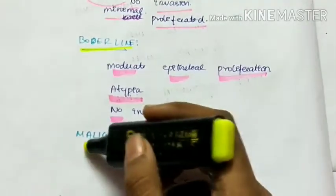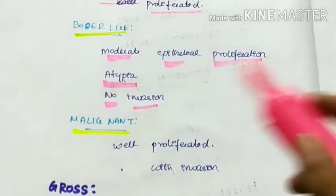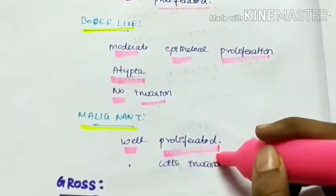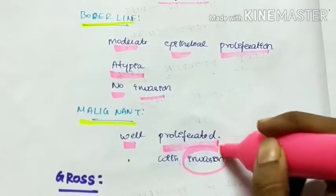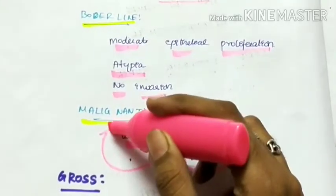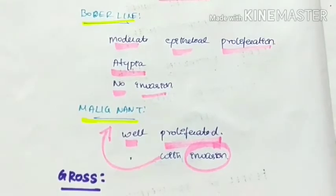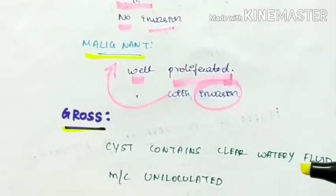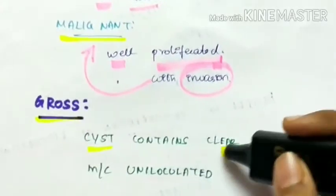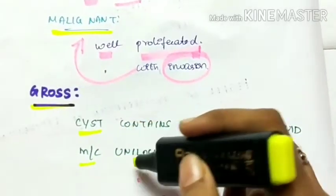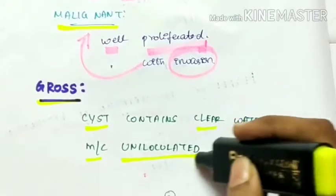Next is malignant serous tumor. Here the cells are well proliferated and invasion is seen as it is malignant. Only malignancy shows the property of invasion. Grossly, the cyst contains clear watery fluid and more commonly it is uniloculated.